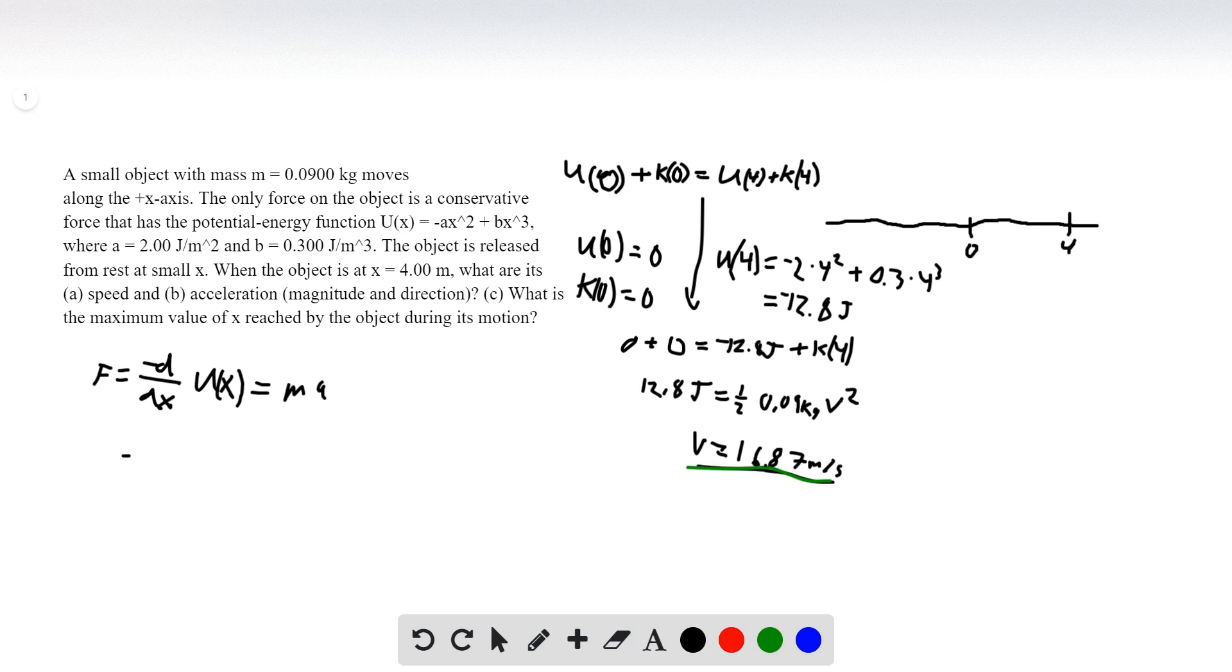So the negative dU/dx of the potential energy. So I'm going to bring down the 2. So that's negative A, 2, x, reduce the power from 2 to 1. And then plus B, bring down the 3, 3, reduce this power to 2. And then that's going to be equal to 2A x minus 3B x squared.